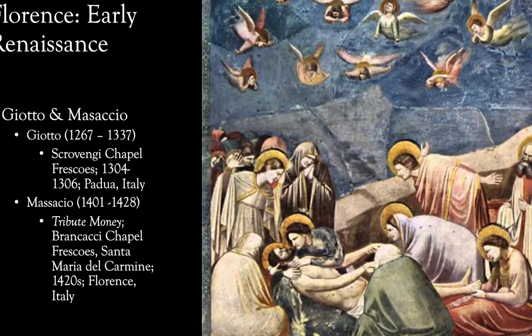Let's look at some examples by Giotto. The painting on the right is from the Scrovegni Chapel in Padua, Italy — one of a series of frescoes. A fresco is a painting onto the wall of a building where the paint is applied when the plaster is still wet, so the paint dries into the plaster rather than on top of it, creating a more permanent image. That's why we still have these frescoes from six or seven hundred years ago intact today.